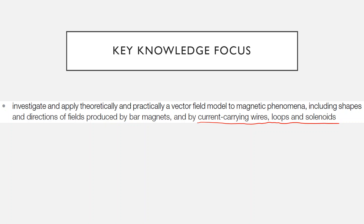Now before we get into it, up until this point you might only be aware of the magnetic fields surrounding magnets. A magnet produces a magnetic field, fair enough. What you might not know is that electric currents produce their own magnetic field, and that's what we're going to study in this video — what shape these currents produce and in what direction these magnetic fields point.